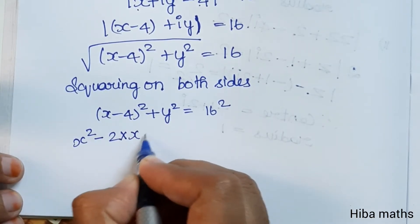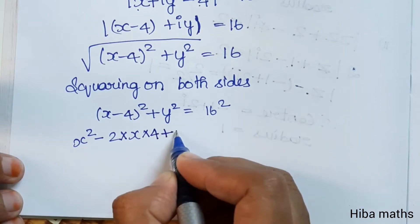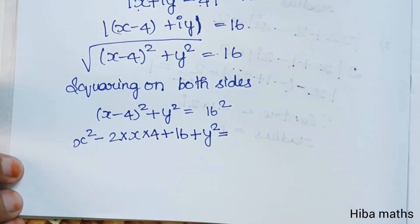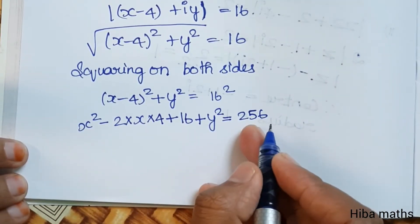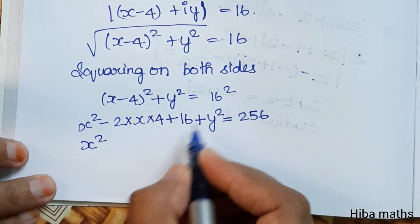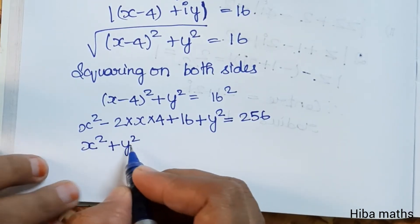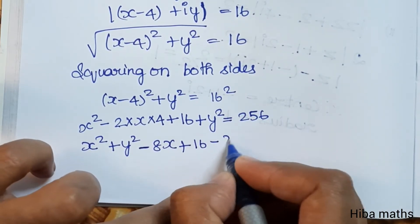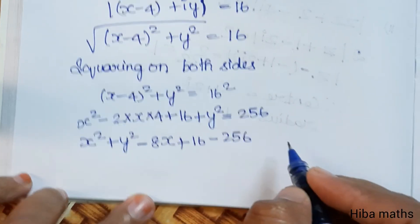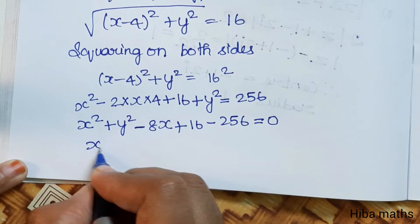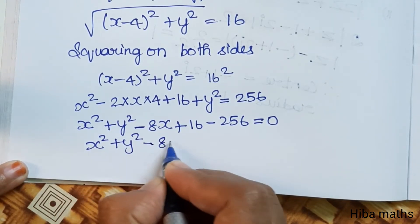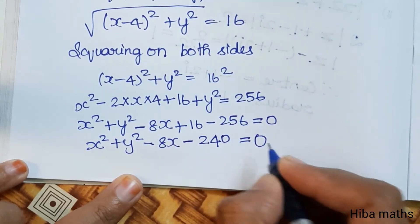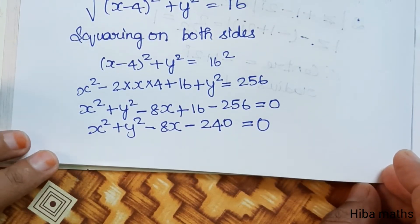Expanding (x - 4)² using (a - b)² = a² - 2ab + b²: x² - 8x + 16 + y² = 256. Rearranging: x² + y² - 8x + 16 - 256 = 0, therefore x² + y² - 8x - 240 = 0. This is the Cartesian equation of the locus of z.